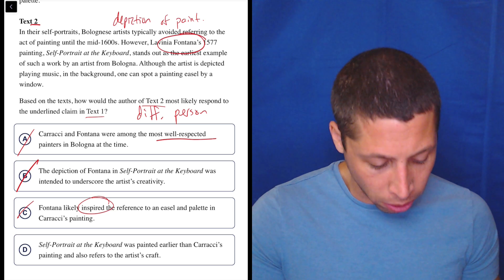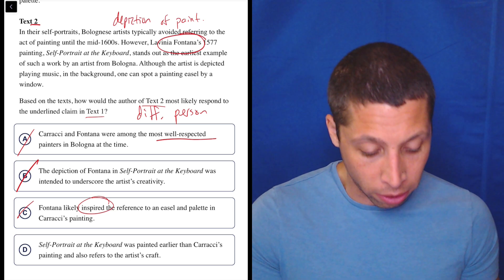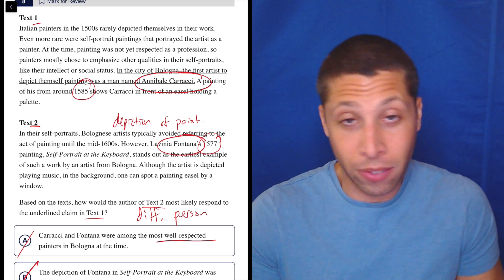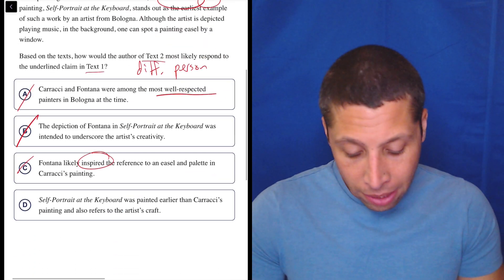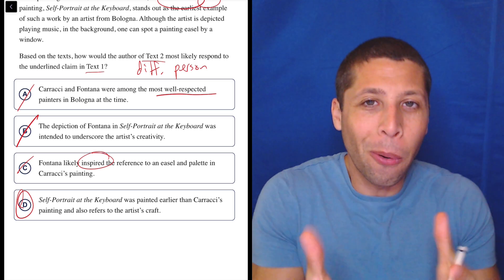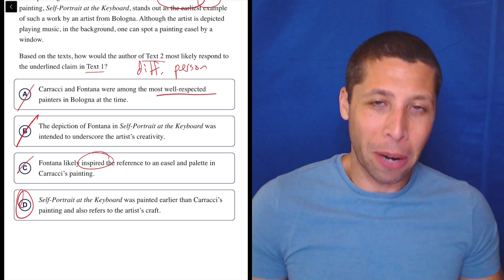D, self-portrait at the keyboard was painted earlier than Karachi's painting and also refers to the artist's craft. Well, let's see. Is it earlier? Yeah, 1577 versus 1585. Yeah. Plus, even without the earlier part, I checked it because why not. But the whole point was that they're naming a different person.